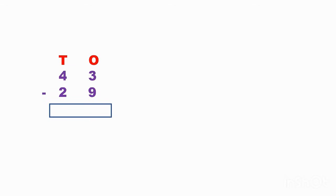Now here we have forty-three minus twenty-nine. Three minus nine — I cannot subtract. So what do I have to do? I have to borrow one ten from the tens place. There are four tens, so three tens are remaining after I borrow one. I got ten plus three, which is thirteen.